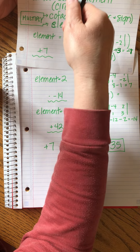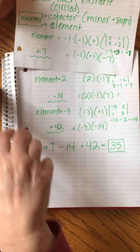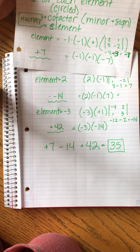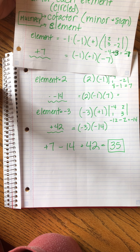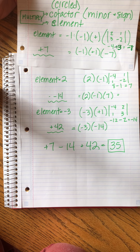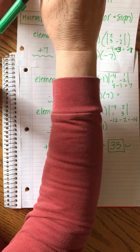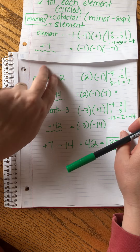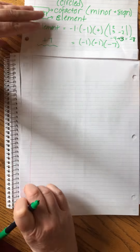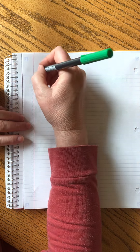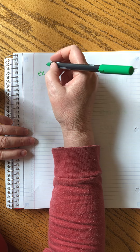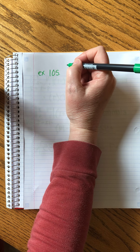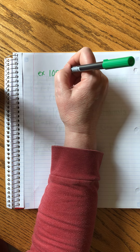Was this easier than drawing out two extra rows and multiplying across? That's an opinion, but this is pretty straightforward. So this is our final answer — that's how you expand a determinant by the cofactor method. Now we have to do it one more time. Example 105.3. Use cofactors to evaluate.